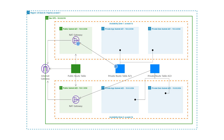We are going to do the same thing with the second availability zone. We will create another NAT gateway in the public subnet AZ2. Then we will create another route table called private route table AZ2. We will add a route to this route table to route traffic to the internet through the NAT gateway in the public subnet AZ2, then associate this route table with private app subnet AZ2 and private data subnet AZ2.